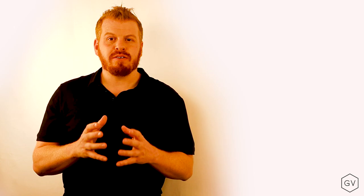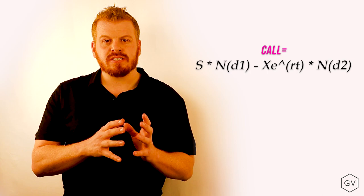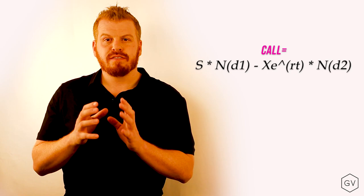We finally have all the parts and we can now calculate the value of the Black-Scholes formula. We can scale the current stock price for D1 minus the present value of the strike price for D2.